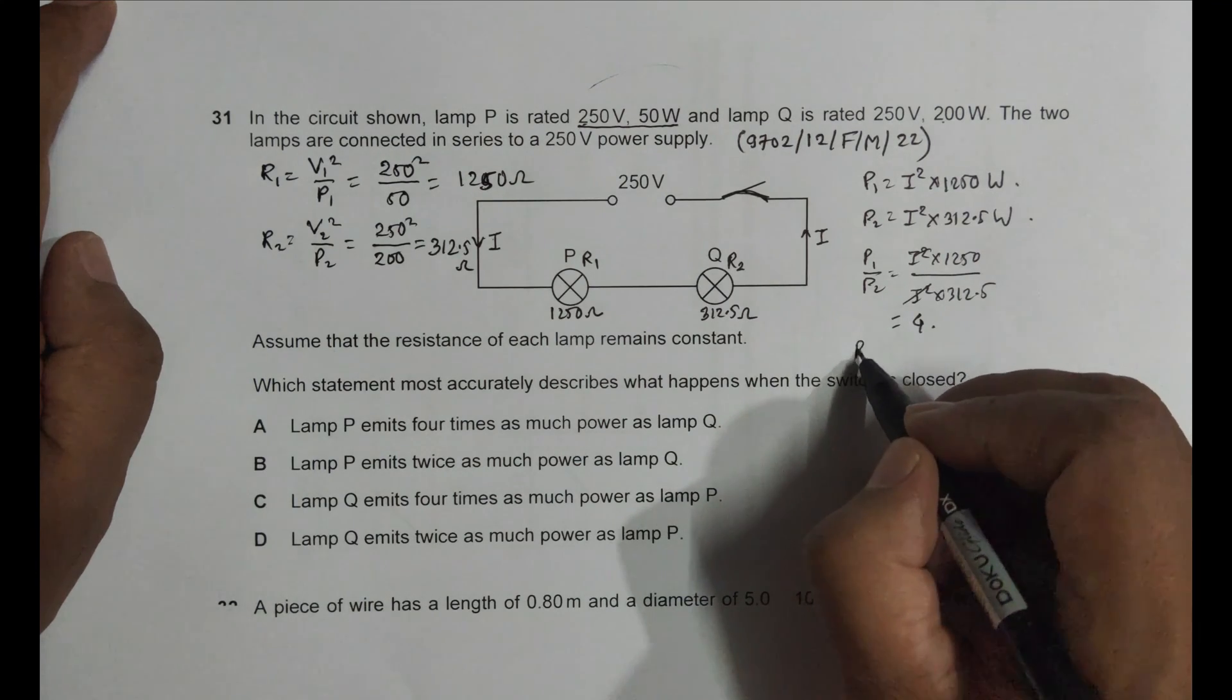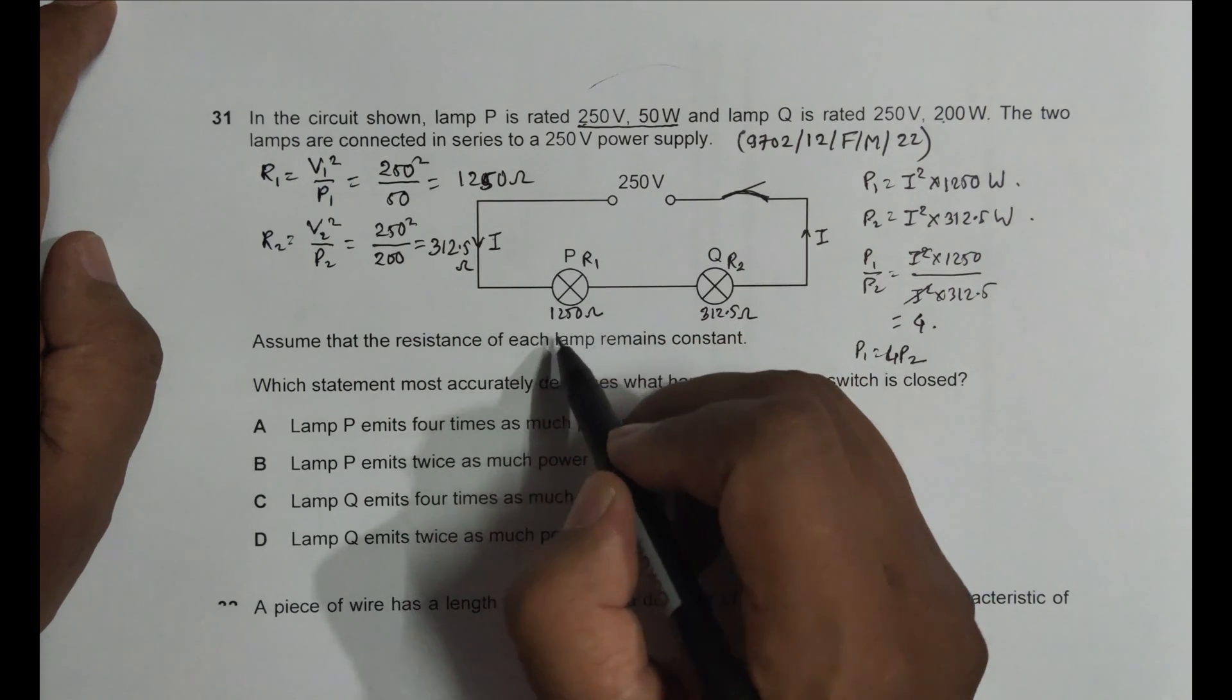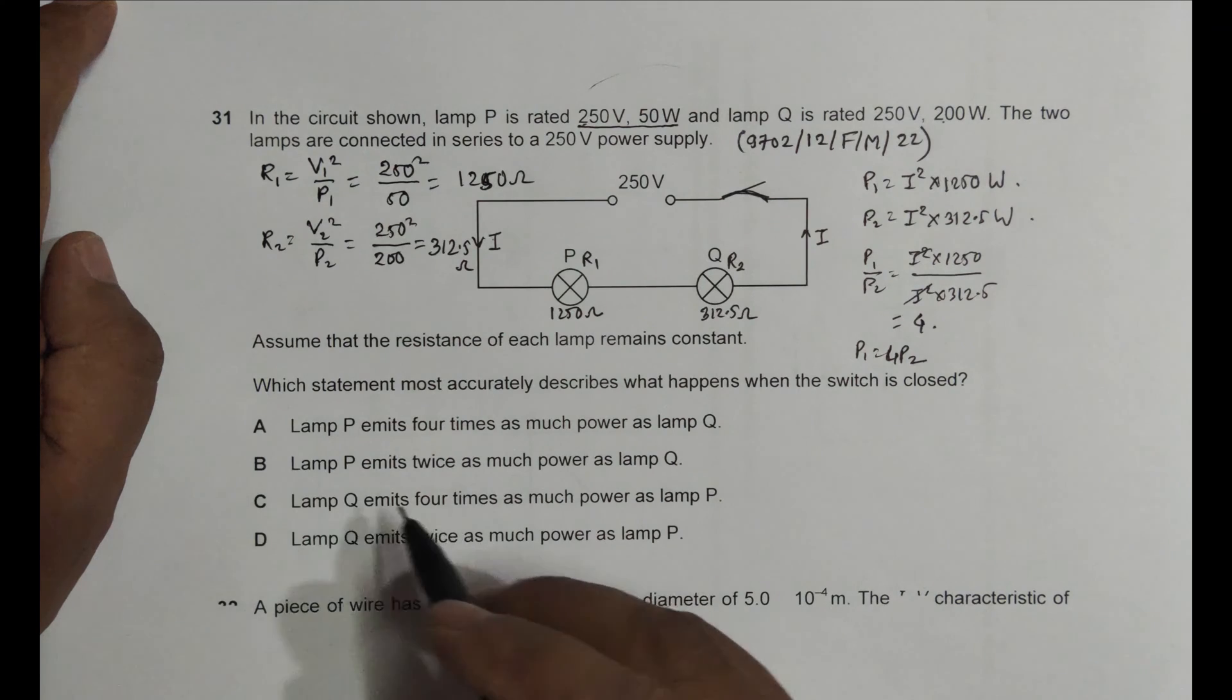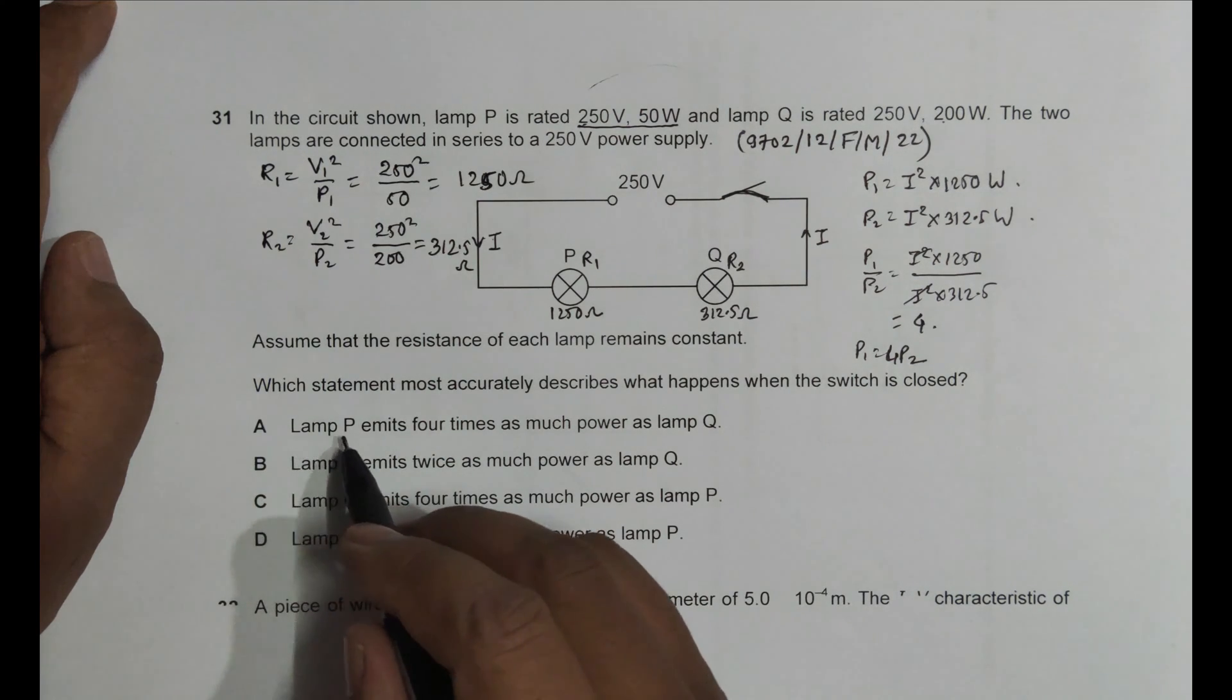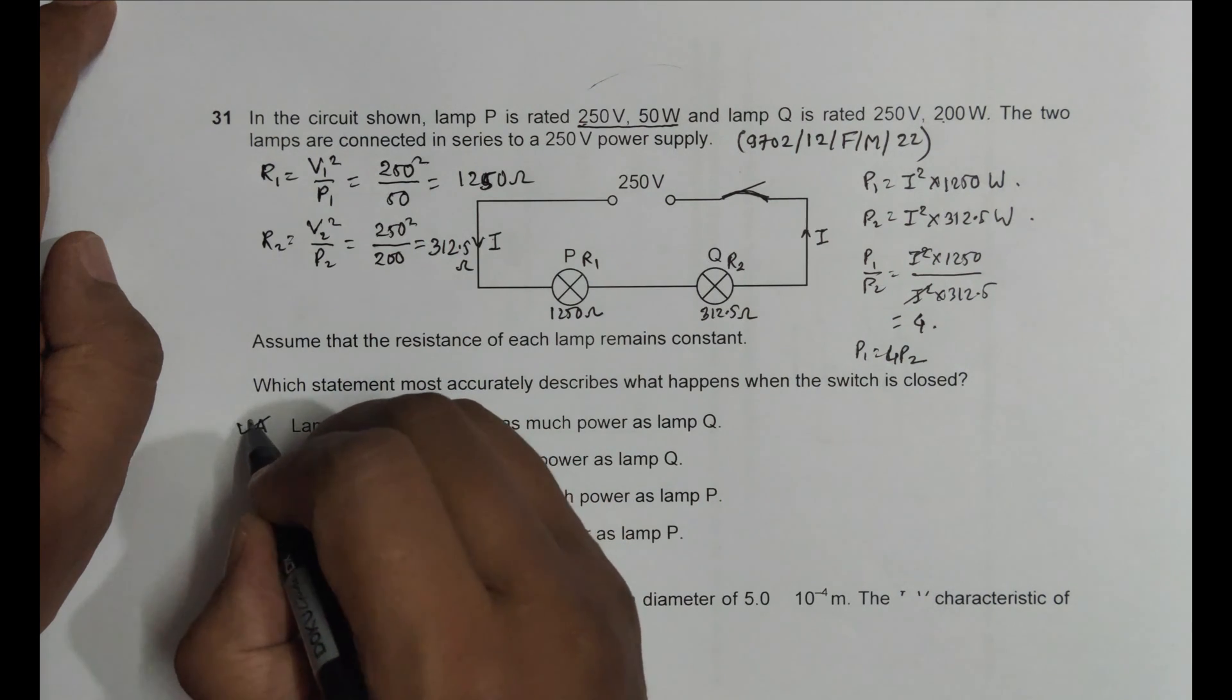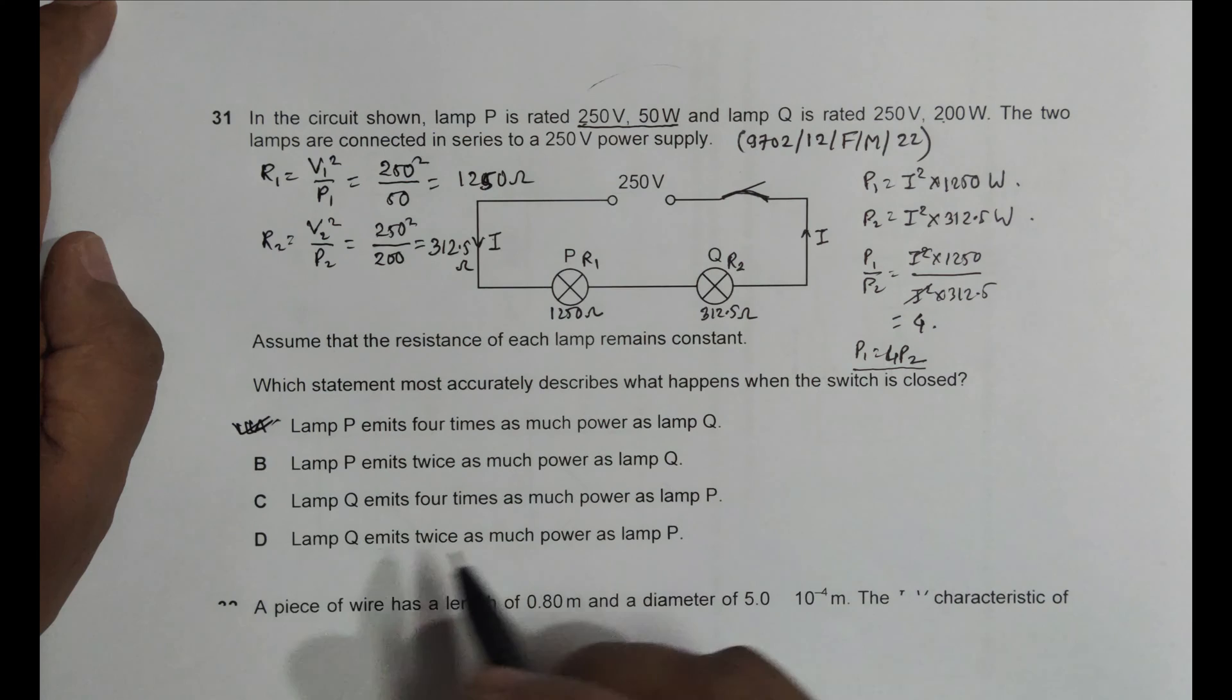So this is 4, that means power 1 is equal to 4 times power 2. So this thing will be consuming or radiating 4 times more power than this thing. And if you go to the choices, lamp P emits 4 times as much power as lamp Q.